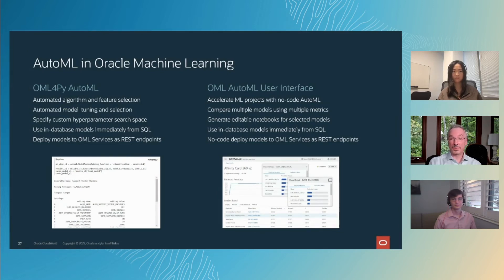OML for Python provides a Python API for automated algorithm and feature selection, and automated model tuning and selection using the in-database algorithms. Users benefit from the intelligence baked into the AutoML process, but they can also explicitly augment the hyperparameter search space with custom values.